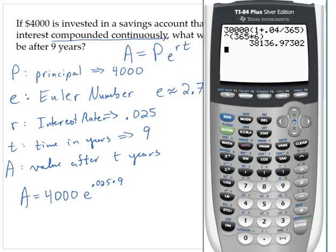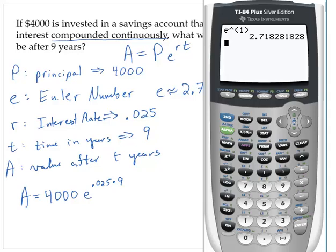Our calculator actually has an E button on it. It is the second function of the button that says Ln. For example, if I typed E to the first power, that would give me 2.71828. That's the approximation of E.